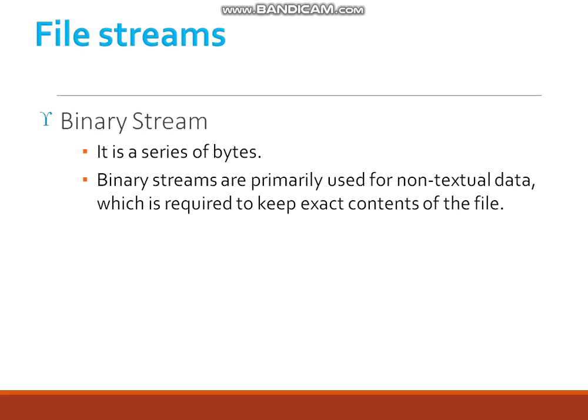The second type is a Binary stream. A binary stream is a series of bytes. Binary streams are primarily used for non-textual data, which is required to keep the exact contents of the file accurate.